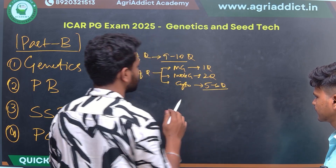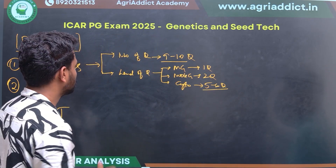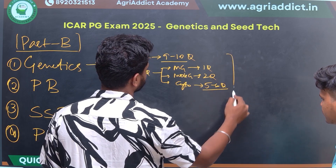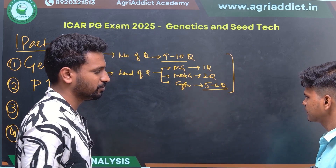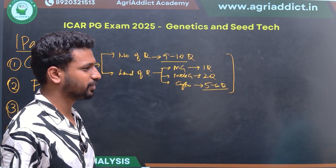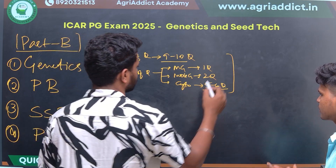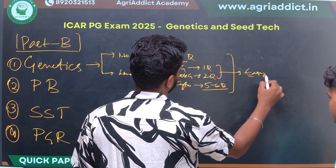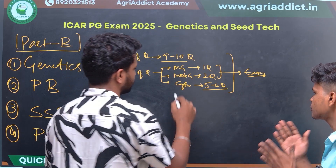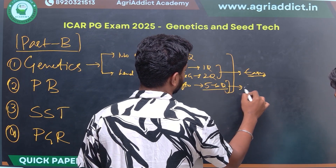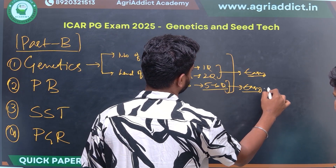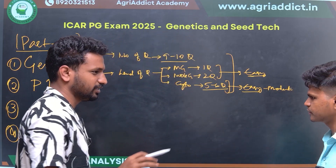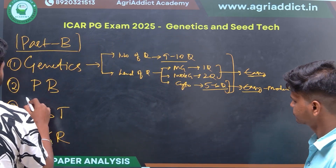Regarding the level of questions in Genetics: Mendelian Genetics and Molecular Genetics were both easy. Cytogenetics was easy to moderate — a bit more confusing. So overall for Genetics, the difficulty ranged from easy to moderate.